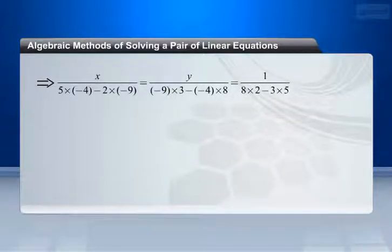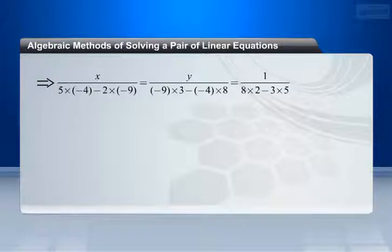So now we can write it as: x divided by (5 multiplied by minus 4, minus 2 multiplied by minus 9) equals y divided by (minus 9 multiplied by 3, minus minus 4 multiplied by 8) equals 1 divided by (8 multiplied by 2, minus 3 multiplied by 5).